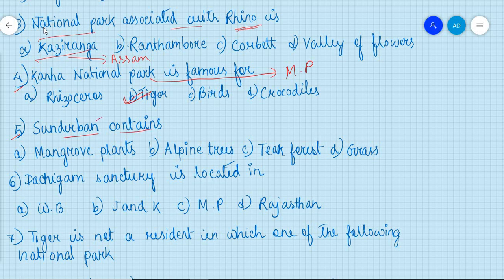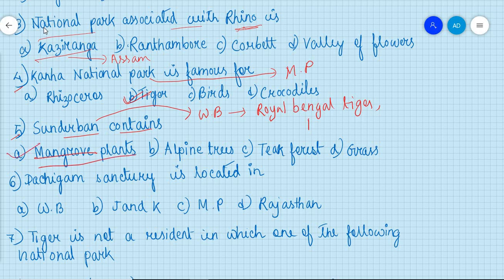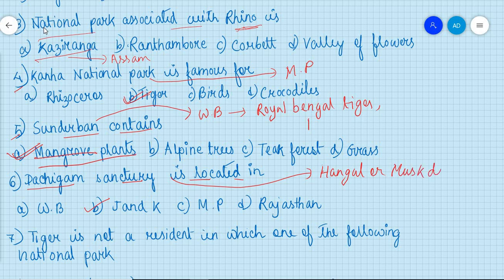Sundarban national park is situated in West Bengal and it is famous for the Royal Bengal Tiger. It is also famous for mangrove plants. The next question: Dachigam Sanctuary is located in Jammu and Kashmir, and it is famous for Hangul, also known as the Kashmir stag, or musk deer. This question has appeared in exams before.